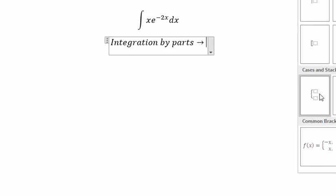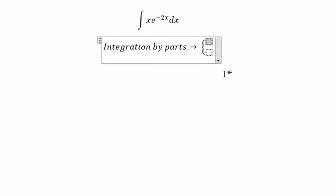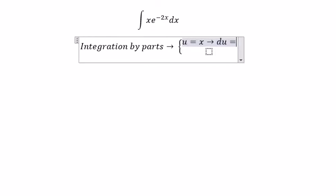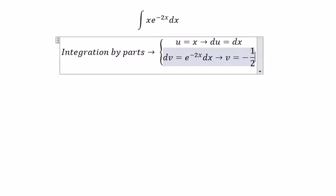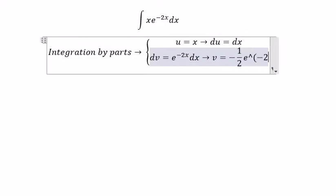We have u and dv. u equals x, du equals dx. For dv, we have e to the power of negative 2x, so v equals negative 1 over 2 e to the power of negative 2x.